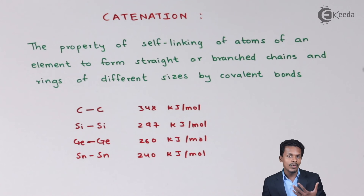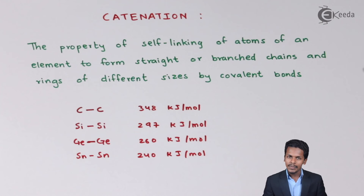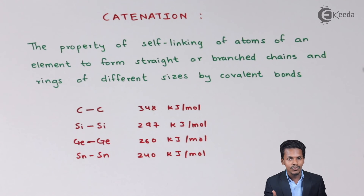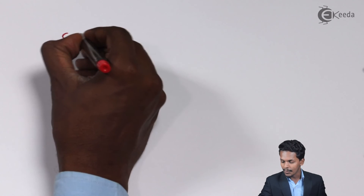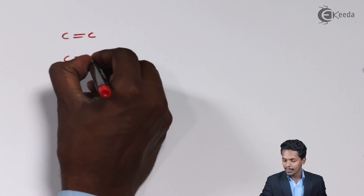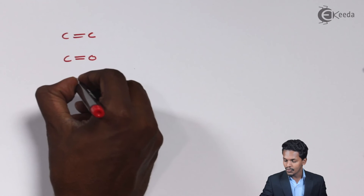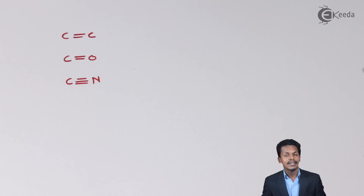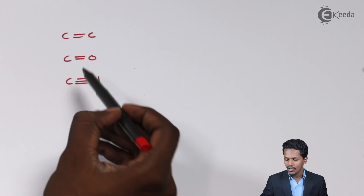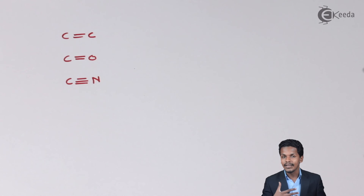It is not only that carbon forms bonds with carbon alone — it also has the capacity to form double bonds. Carbon-carbon double bonds occur, as well as carbon-oxygen double bonds (C=O). Carbon can also form a carbon-nitrogen triple bond (C≡N). This ability to form multiple bonds with smaller, more electronegative elements is a property not exhibited by other group 14 elements.